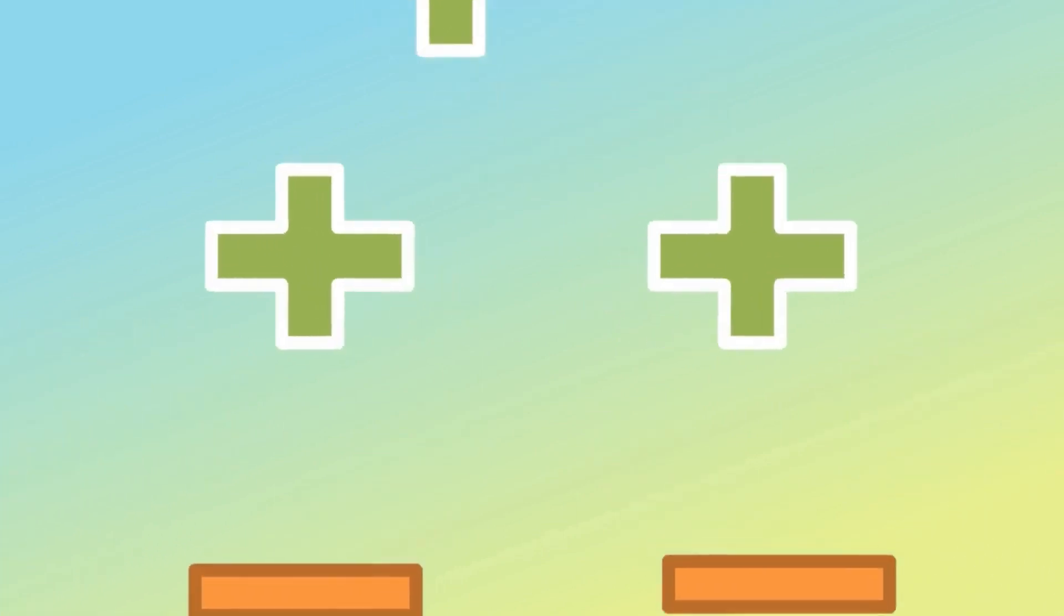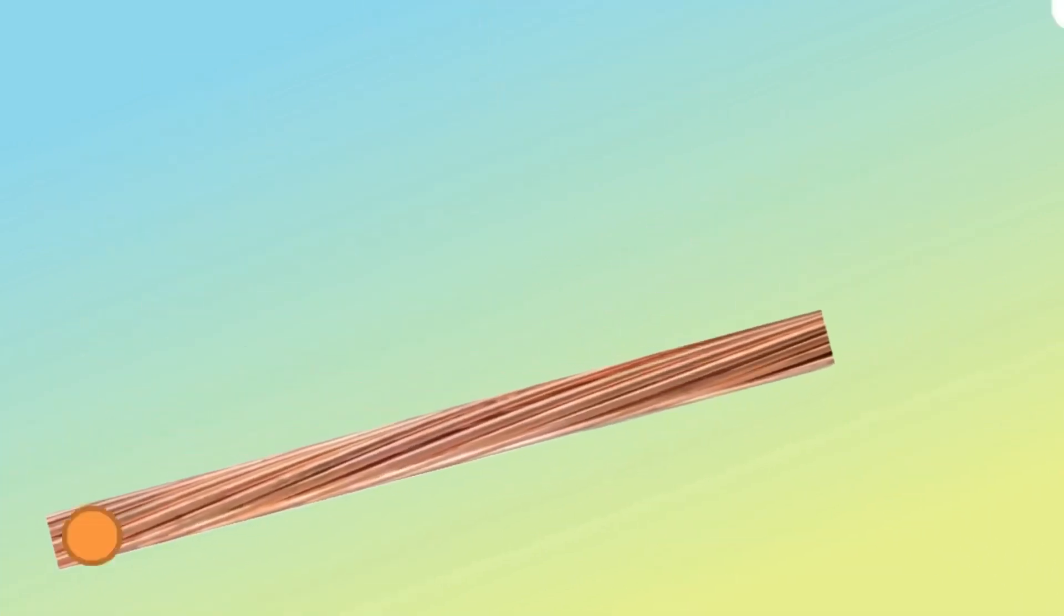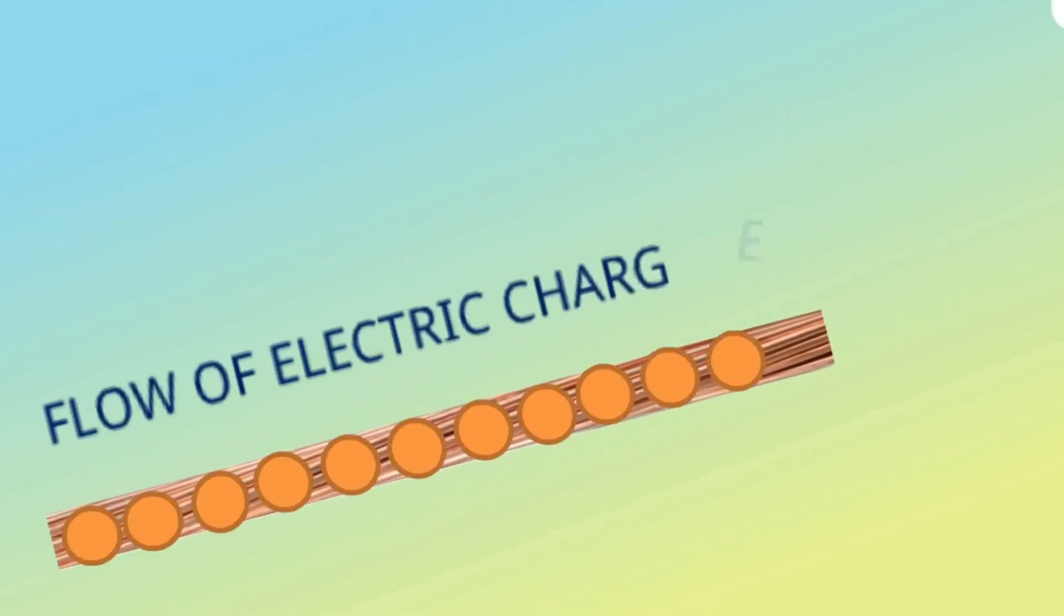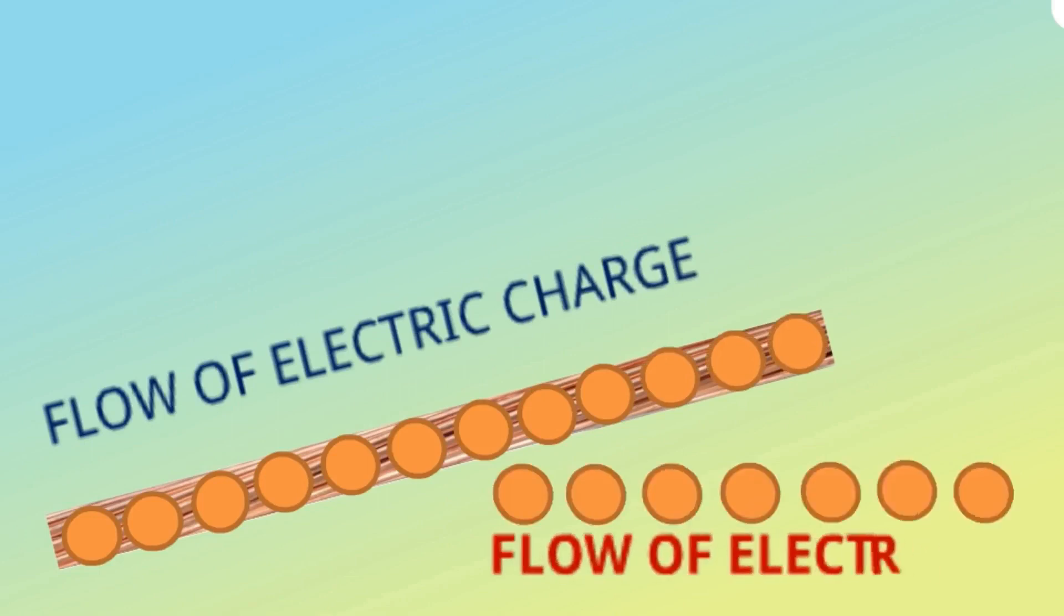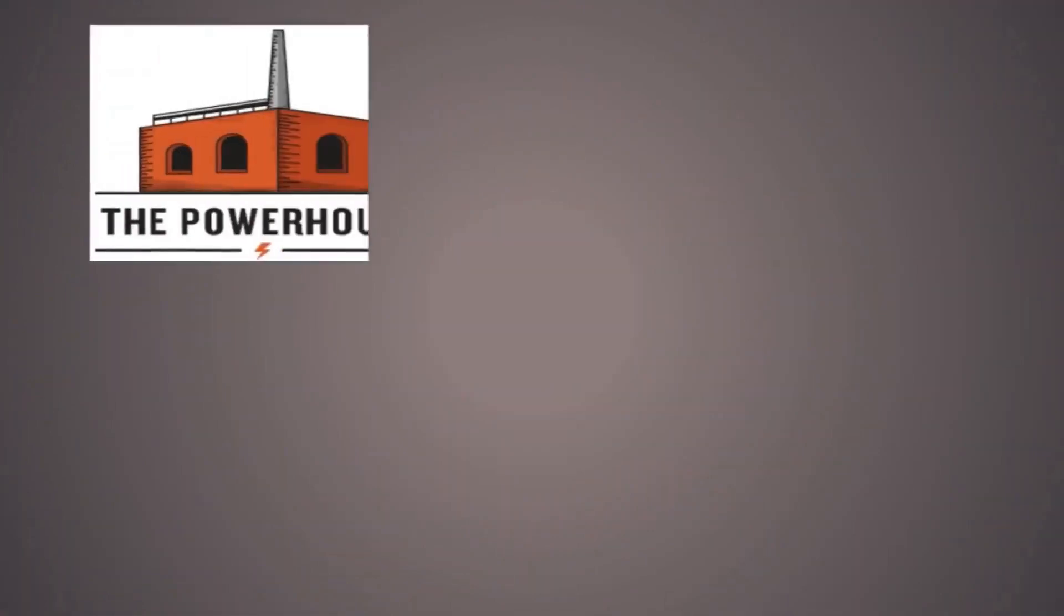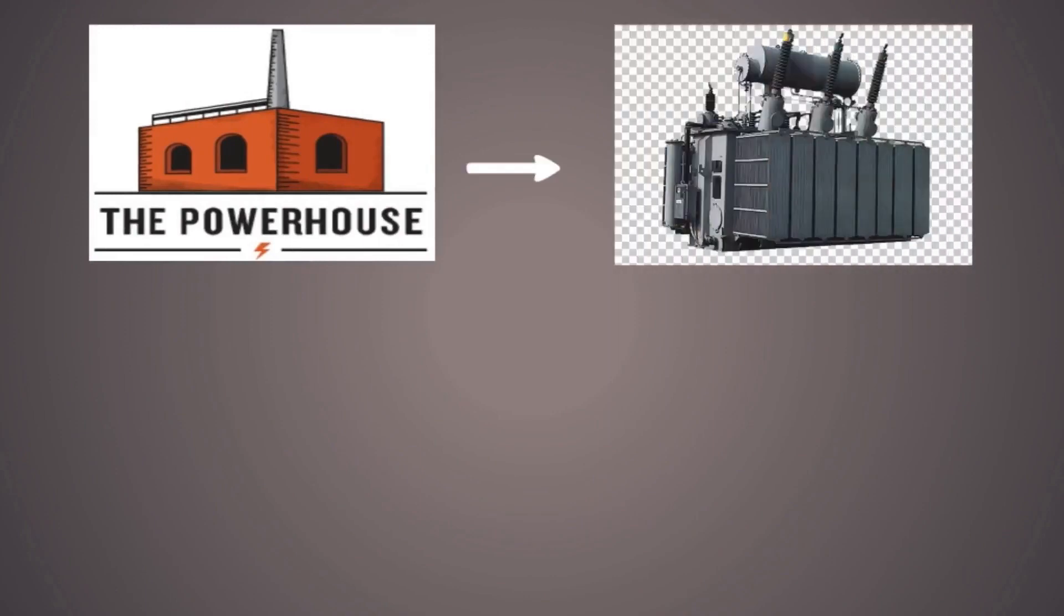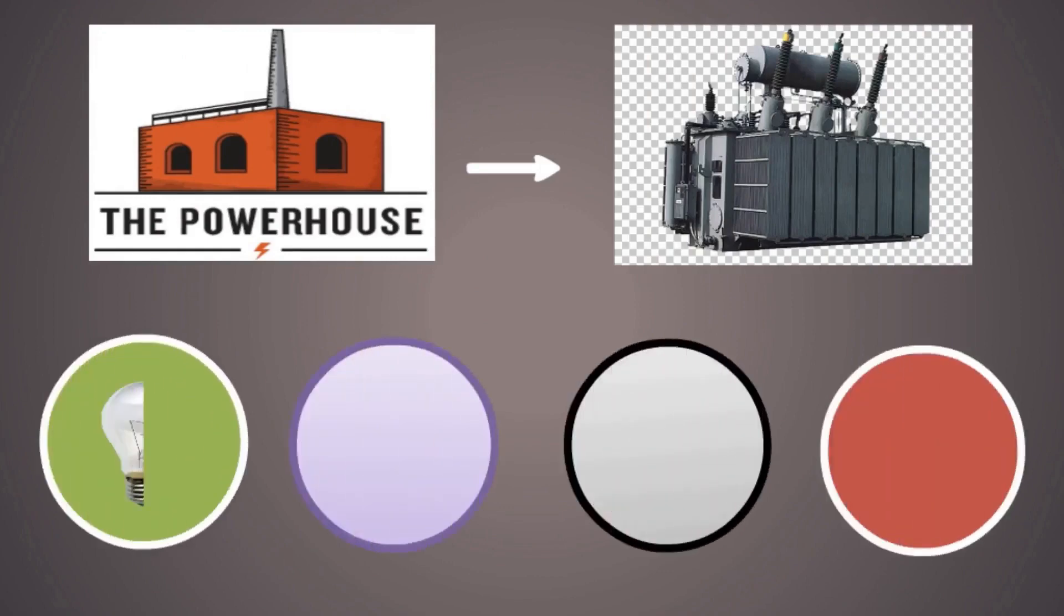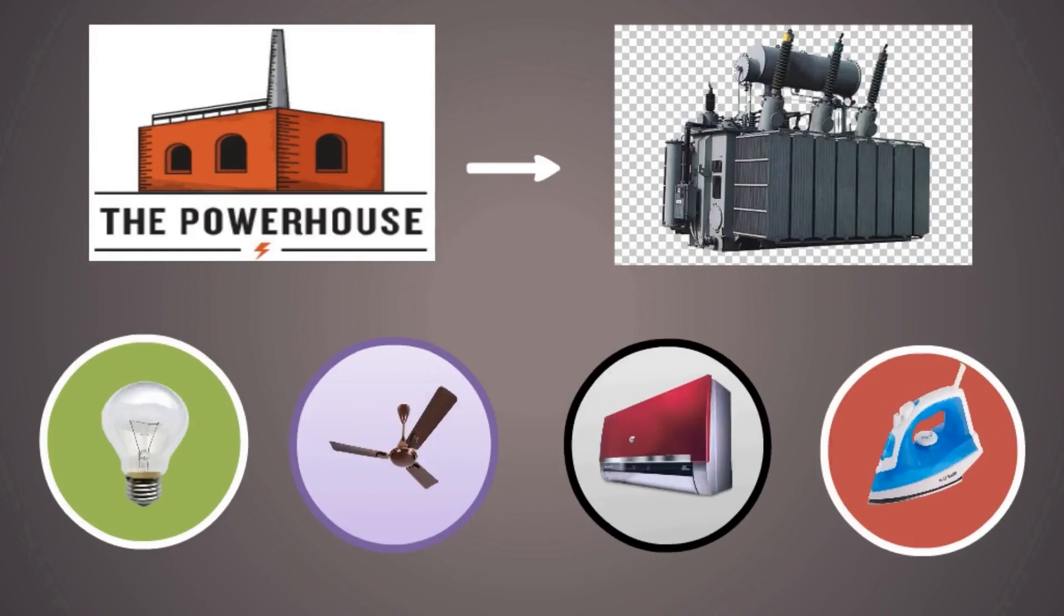If we take a very small piece of bare wire, this flow will be like this - a flow of electric charge, which means simply a flow of electrons. We have seen that electric charge always flows in one direction. Why? Because electricity is produced in a powerhouse and this electricity is supplied to transformers where it is stored, and from the transformer, this electricity is supplied to our home appliances. So electricity always goes from powerhouse to transformer to our appliances in one direction.